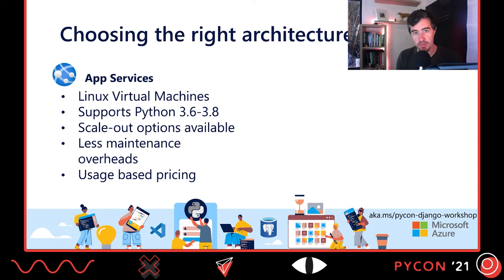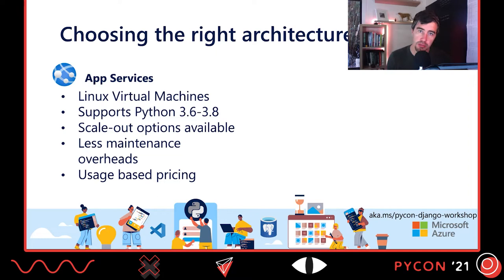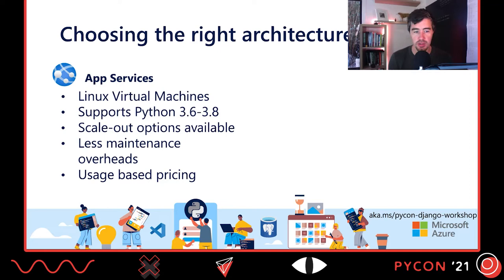For the actual Django application, you've got two main options. The one I recommend is App Services — Linux virtual machines that Microsoft offers as a fully managed service. All you have to do is deploy your code, tell it how much compute and memory you need and how many endpoints you'd like, and it's all managed for you. You don't have to worry about OS patching or disk space. It supports Python 3.6 up to 3.8, and there are plenty of options to scale both horizontally and vertically with a lot less maintenance overhead.